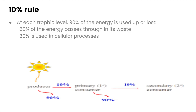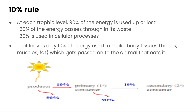At each trophic level, 90% of the energy is used up or lost: 60% of that passes through as waste, and 30% is used in cellular processes. That leaves only 10% to make body tissues and be passed on to the next level. This continues from the producer through the primary consumer, the secondary consumer, and so on.